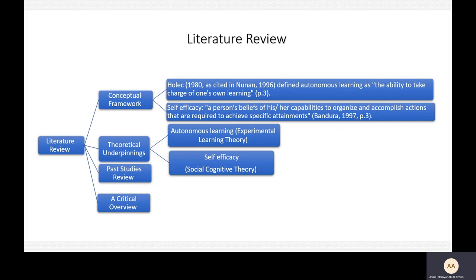In the third section, I reviewed past studies, and in the fourth section, I presented a critical overview. I found many studies focused on teacher and student perceptions of autonomous learning, autonomous learning definitions, and prime strategies students prefer in autonomous learning settings. Many studies also focused on the relationship between autonomous learning and other variables, or the effect of autonomous learning on improving English skills. However, I did not find research focused specifically on autonomous learning self-efficacy, which is why I performed this research.